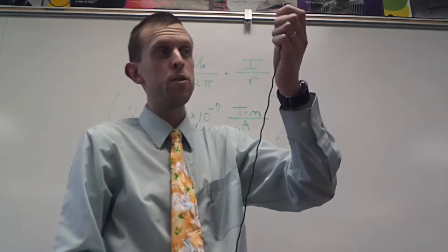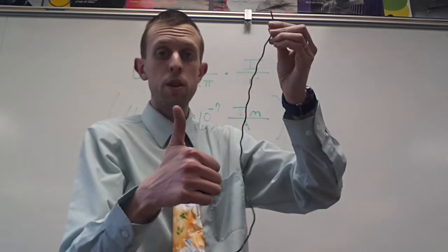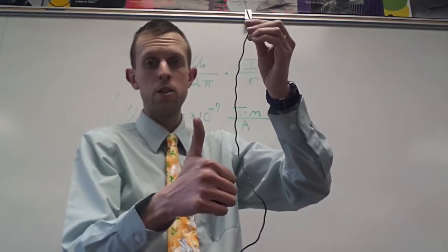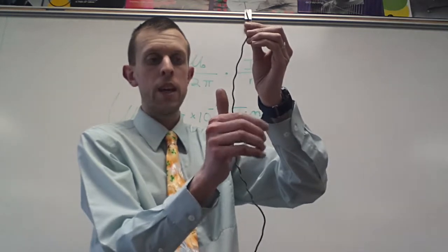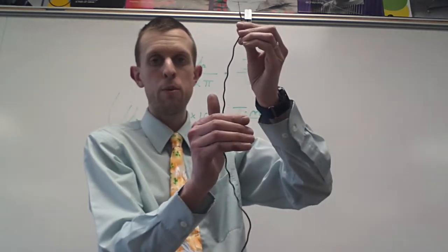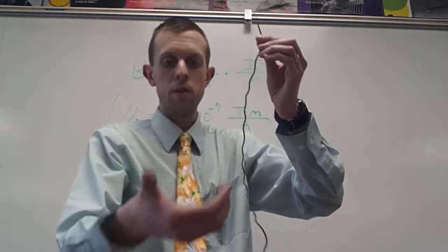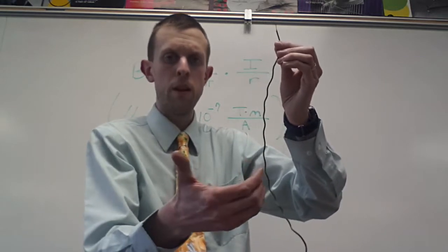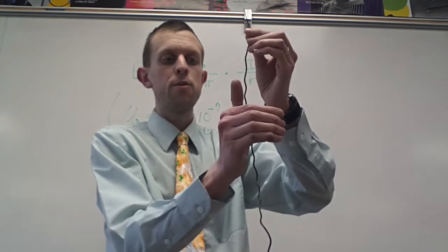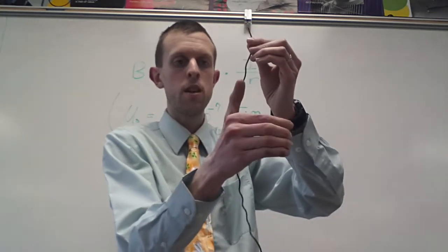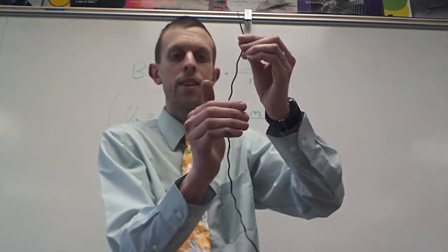So for this new right-hand rule, all you have to do is place your thumb pointed in the direction of current flow. So that'd be upward right now. And then your fingers, you kind of wrap around so that they're perpendicular to your thumb here. They're opposing your opposable thumb. And then those fingers are pointing in the direction of the magnetic field at their location.